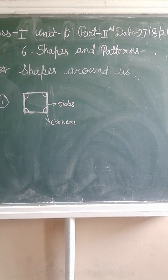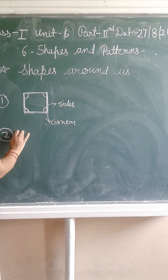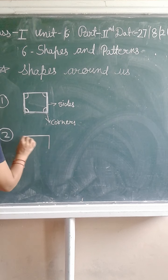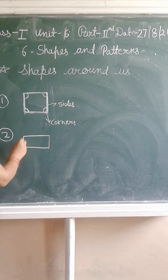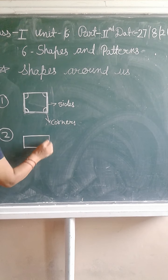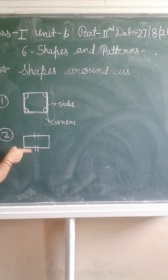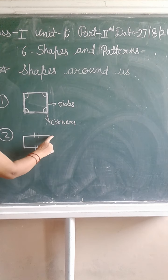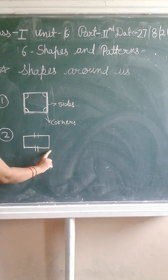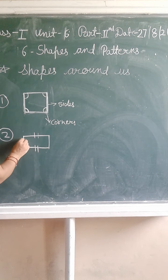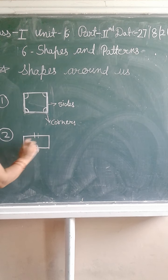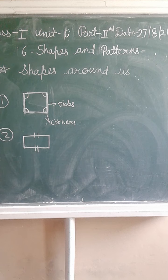Second shape — Rectangle. Rectangle has four sides. Rectangle has four sides and four corners. Opposite sides are equal in a rectangle. In rectangle, all sides are not equal — only opposite sides are equal.